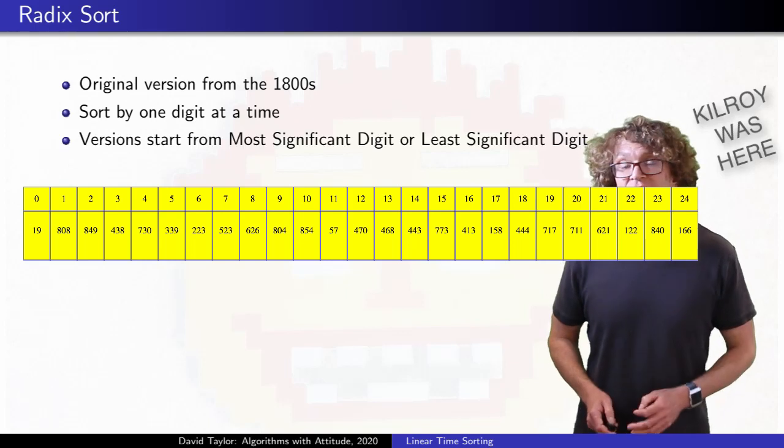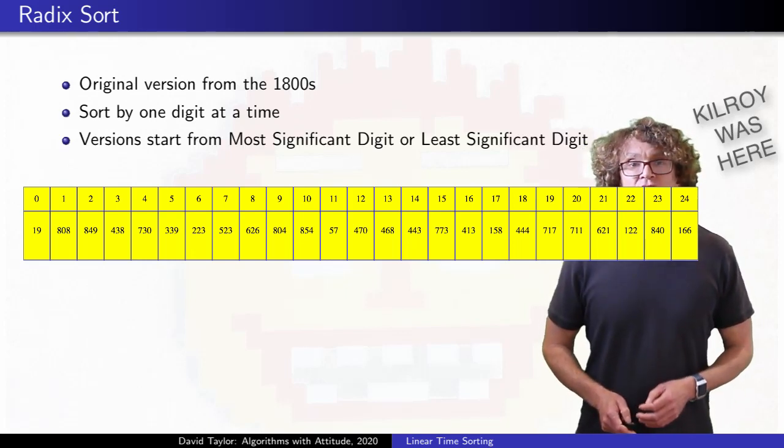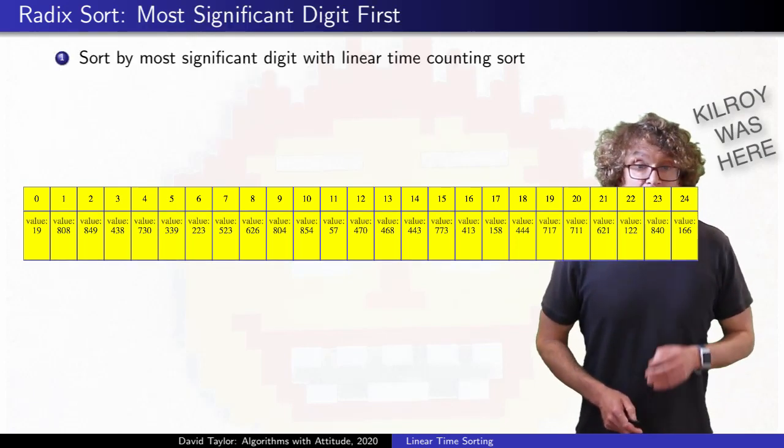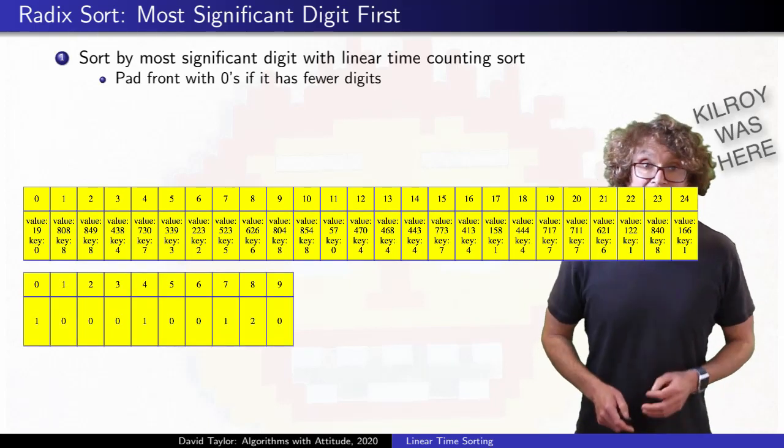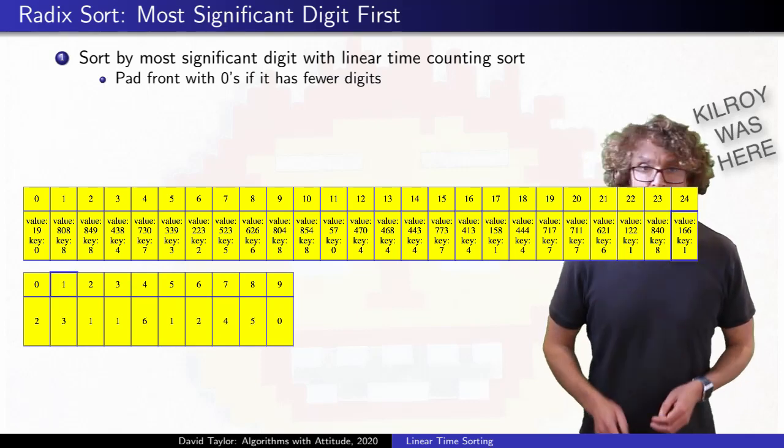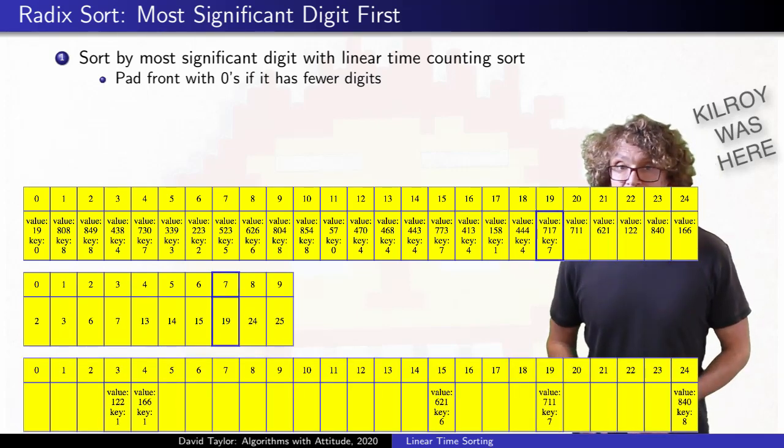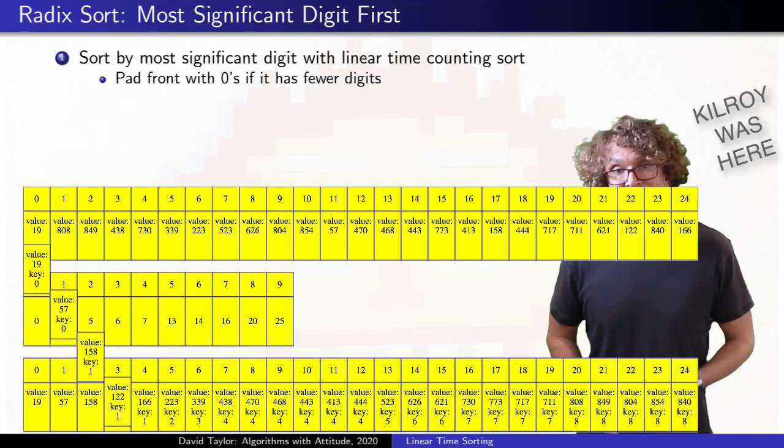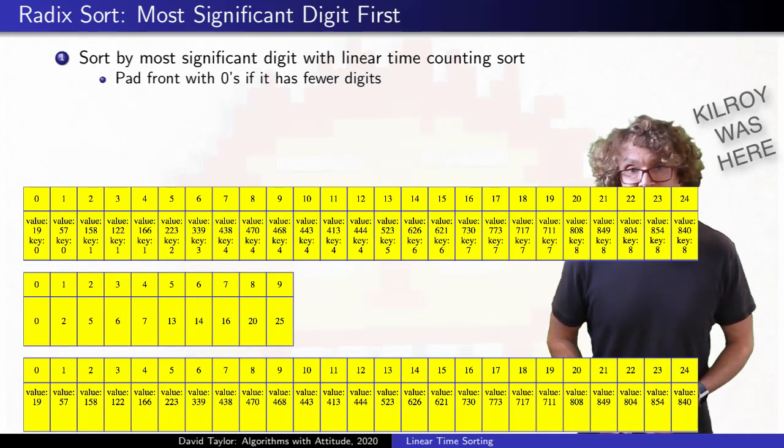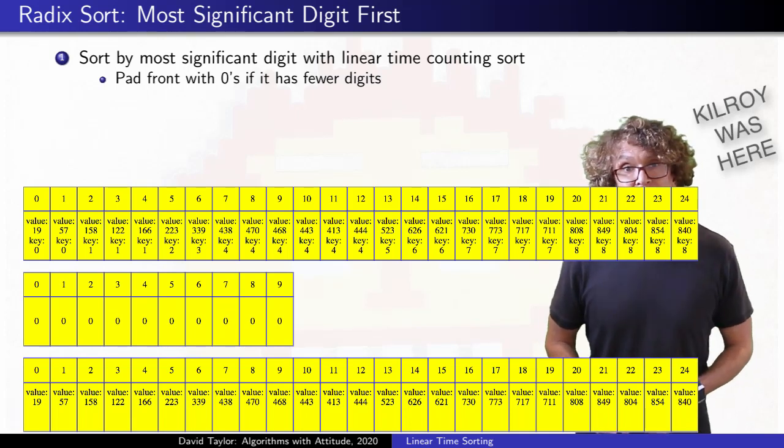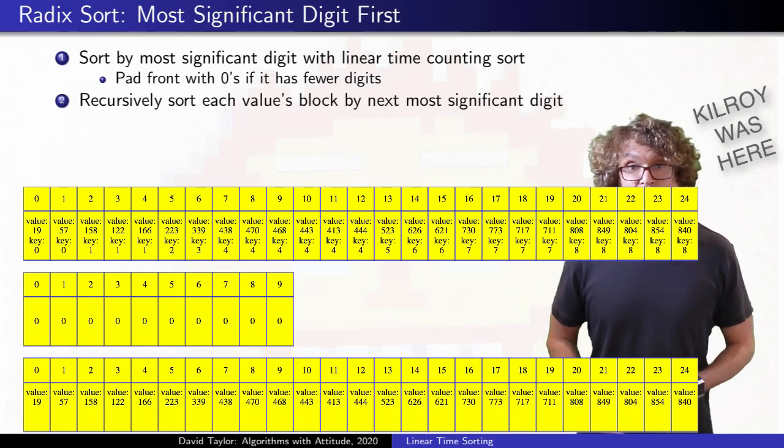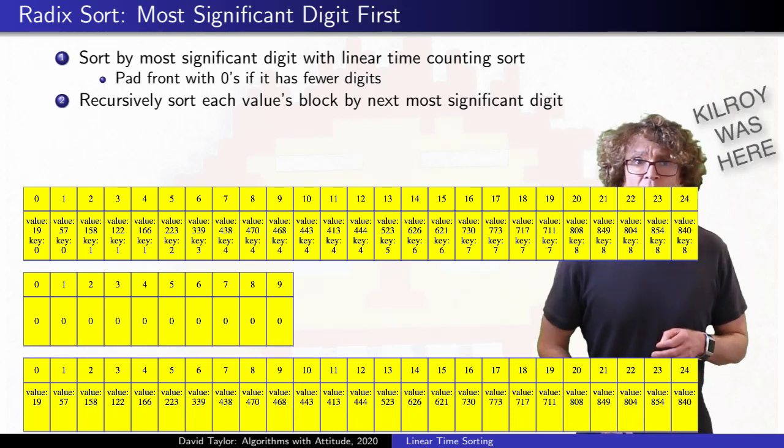I'll start with the most significant digit first version, and we'll see the least significant digit version from the Corman book after that. If we are first sorting by the hundreds digit, we will need to pad numbers less than 100 with a zero in front. We run counting sort on the hundreds digit, and after that finishes, we have all of the numbers in blocks sorted by their hundreds digit. We would want to sort each of those blocks independently by their tens digit. That's a good amount of bookkeeping. Probably the easiest way to do it is to use recursion to organize everything, kind of like quicksort, except here we might have 10 recursive blocks to sort instead of just two.